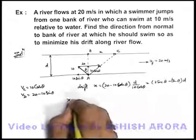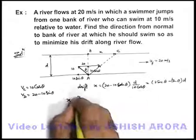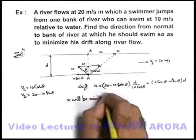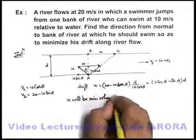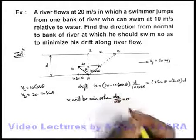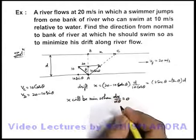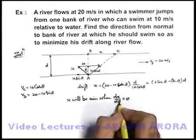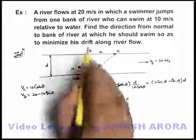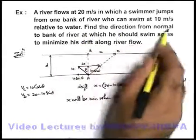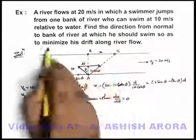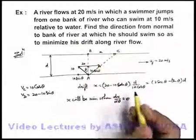Now we can say x will be minimum when dx/dθ is equal to zero. Solving this expression will give the value of theta, which is the direction from the normal to the bank of the river at which he should swim so as to minimize the drift.